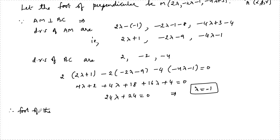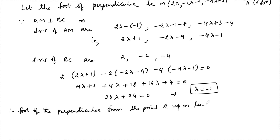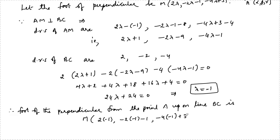Therefore, the foot of the perpendicular from point A upon line BC is found by substituting lambda = −1. The coordinates of M are: (2×(−1), −2×(−1) − 1, −4×(−1) + 3) = (−2, 2 − 1, 4 + 3) = (−2, 1, 7). So M = (−2, 1, 7) is the foot of the perpendicular.